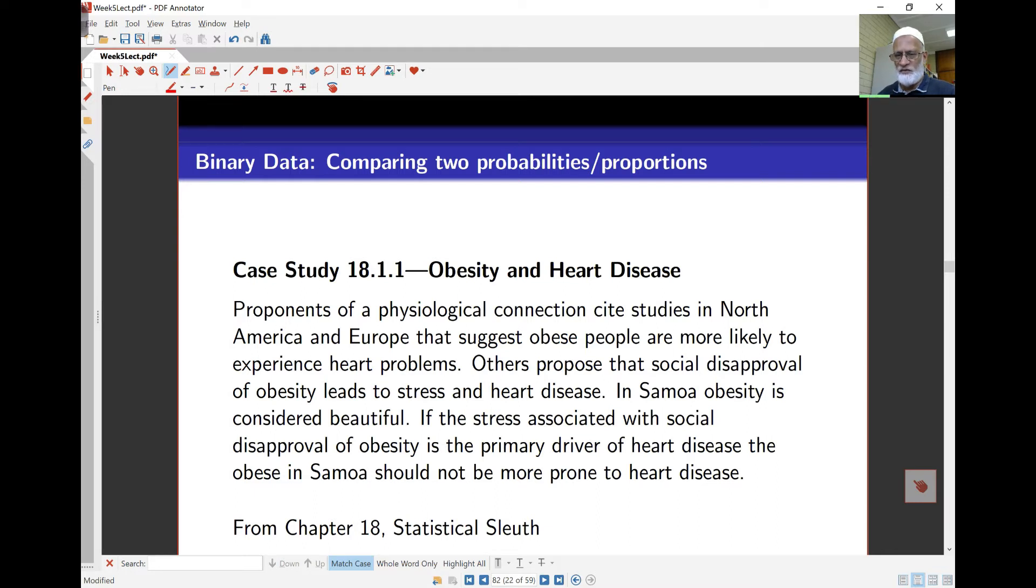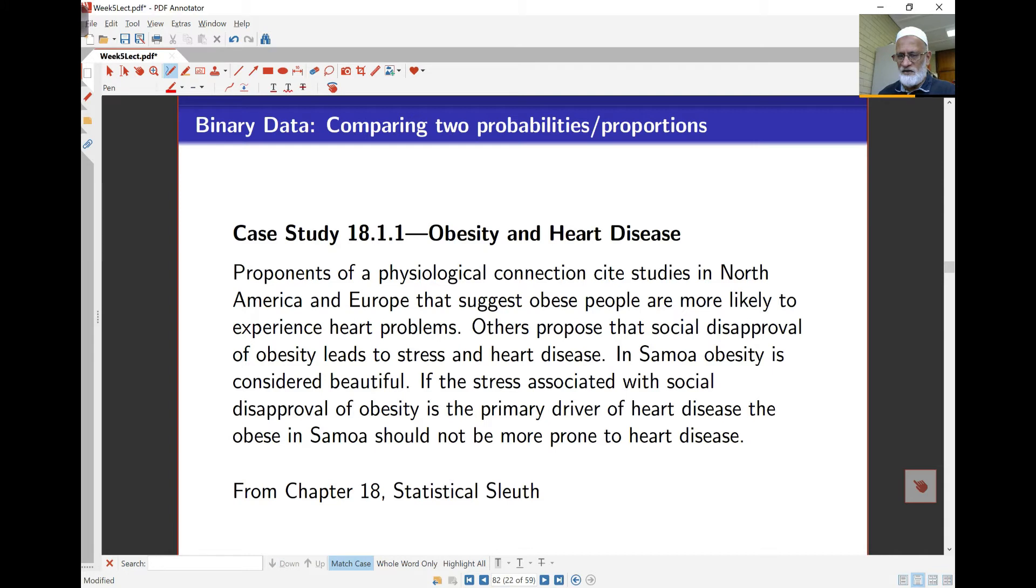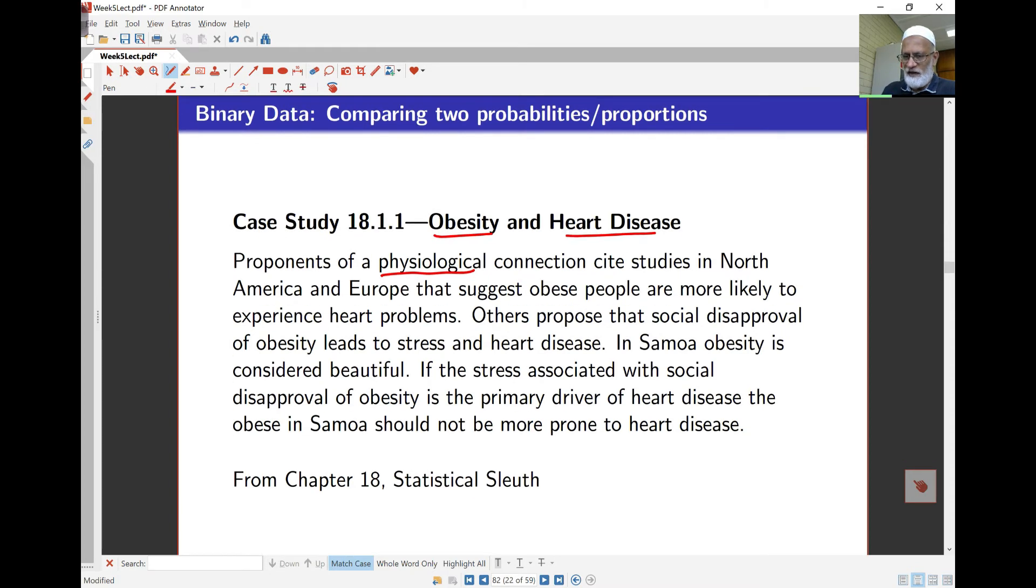Here's an example just to look at some other ideas. This is obesity with heart disease, and the general thinking here is that there is a physiological connection between obese people and those who experience heart disease here. So there's this proposal that social disapproval of obesity leads to stress and heart disease. Now in Samoa, which is a Pacific island not very far from Fiji actually, it's on the east of that, obesity is considered beautiful.